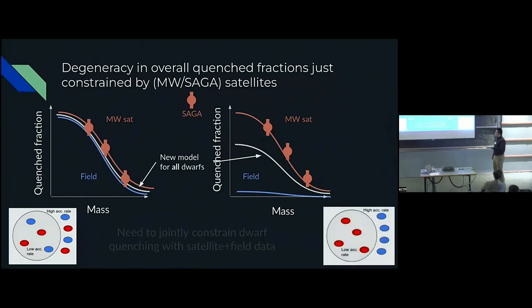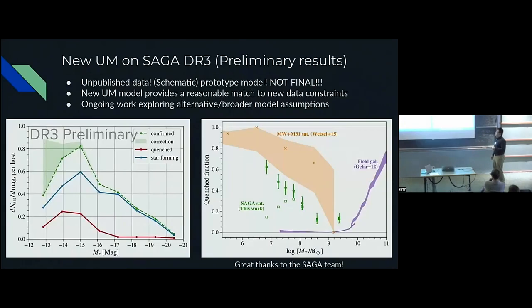What we really need to do is also free up how SFR is correlated with halo formation history. This needs to be jointly constrained by data from something like SAGA and also field dwarfs in SDSS. Everything on the next slide is very tentative. This is unpublished data, we're showing a very prototype model.